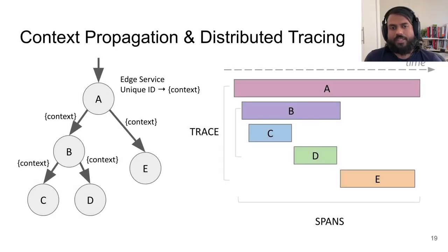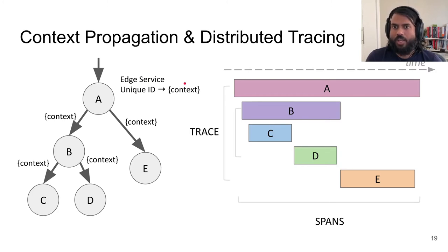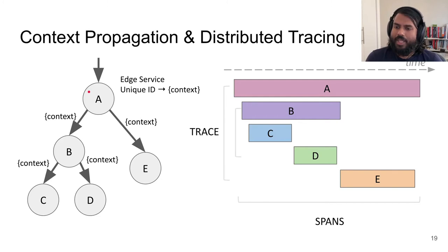Tracing depends on context propagation. When a request comes in through an edge service — this might be an API gateway — it is stamped with a unique ID called a trace ID. This trace ID may contain additional fields, and this is called a context. This context is then propagated to every service in the call chain by using headers or any other similar mechanism.